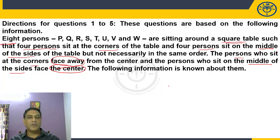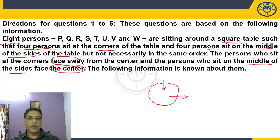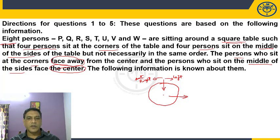In circular arrangement, a person may be facing the center of the table or facing away from the center. For a person facing the center, the left side is always in the clockwise direction and the right side is always in the anticlockwise direction.